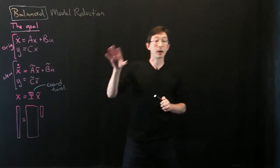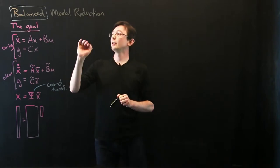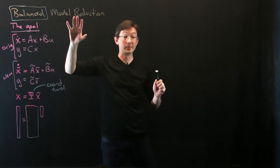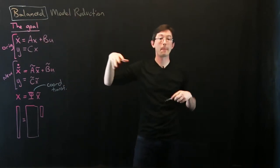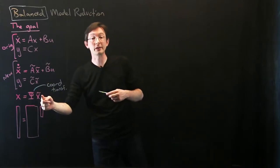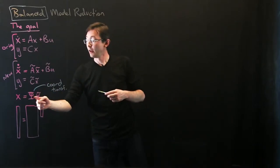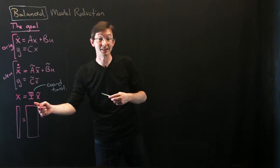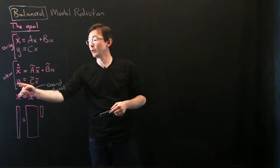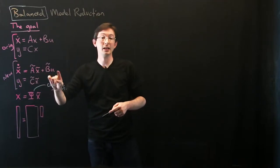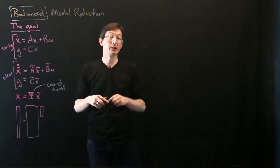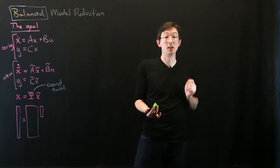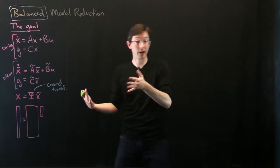Welcome back. In the last video we talked about what is the high-level goal of balanced model reduction, which is to find some coordinate transformation from a high-dimensional state x to a low-dimensional state x-tilde that captures the most input-output dynamics from u to y, because that's all we really care about for control — we can affect u and we can measure y.